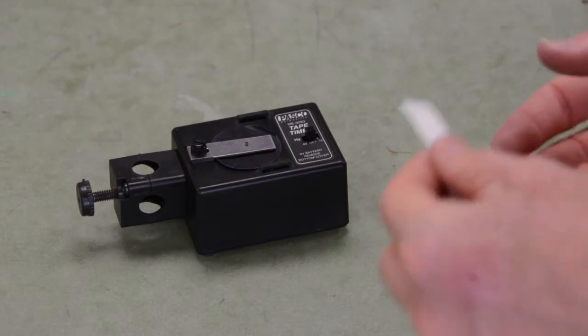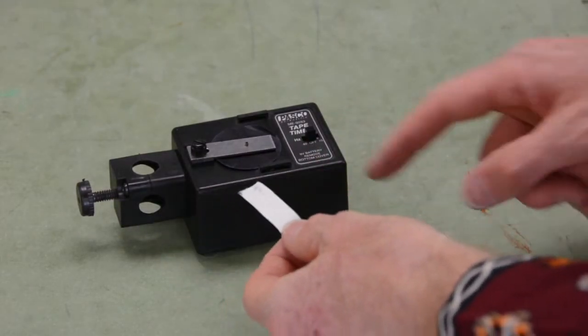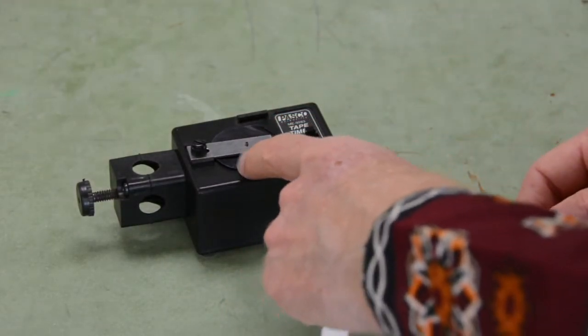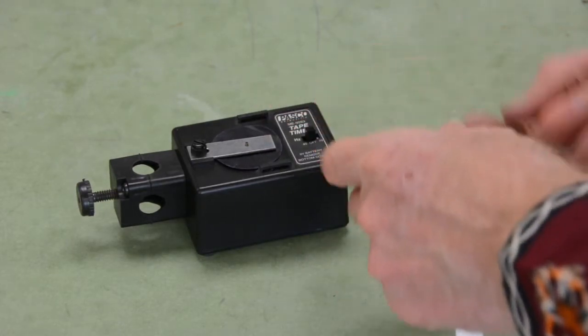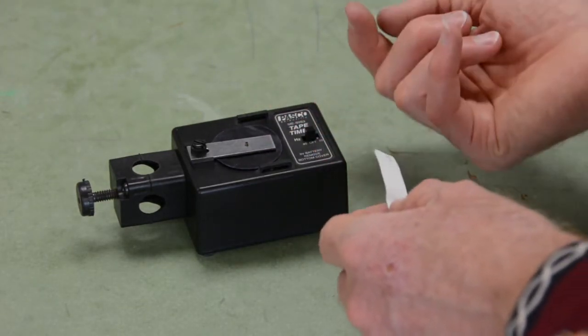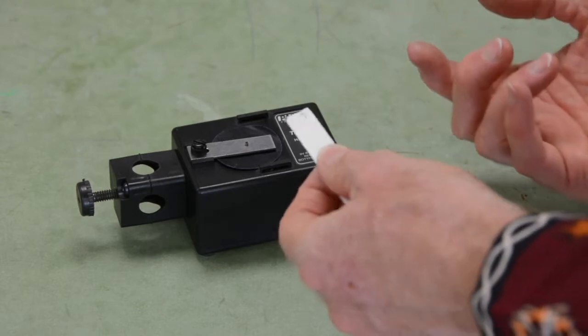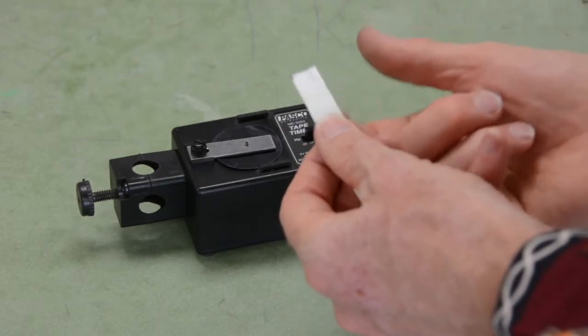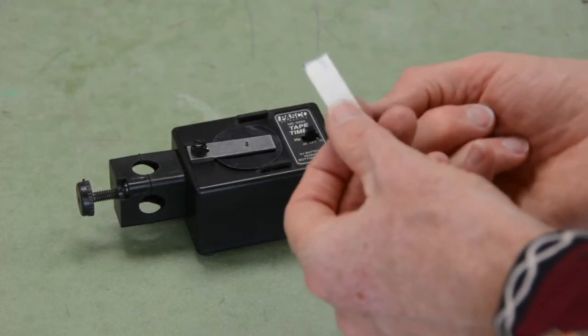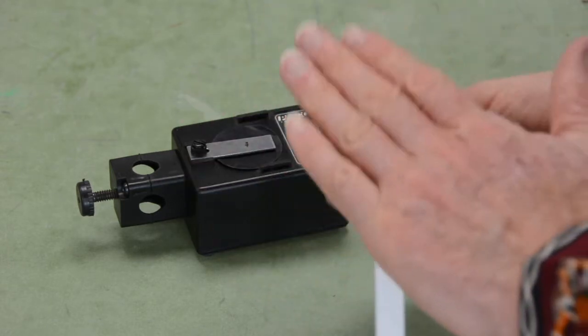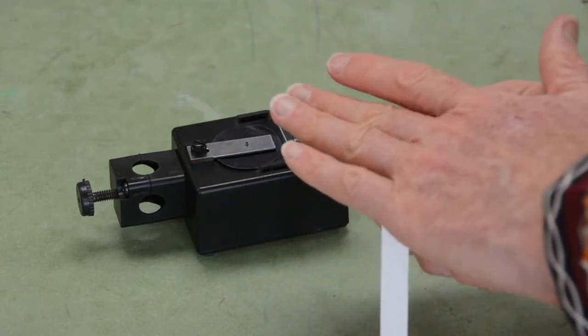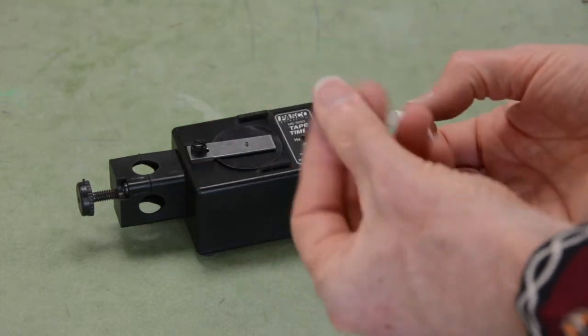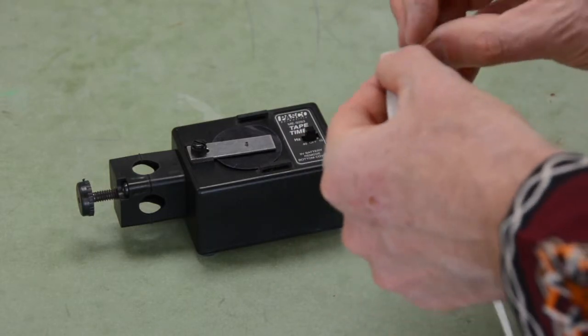What you want to do is thread a piece of ticker tape through these guides between the carbon paper and the steel plate. When the reciprocating rod pokes the carbon paper into the steel plate, it's going to make a mark on this ticker tape. The steel plate provides a backstop so the carbon paper is pressed hard into the ticker tape.